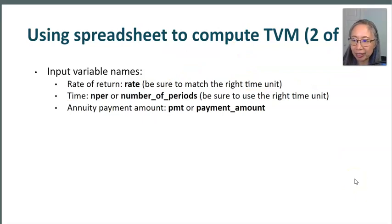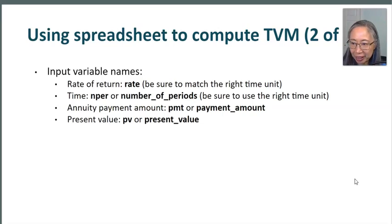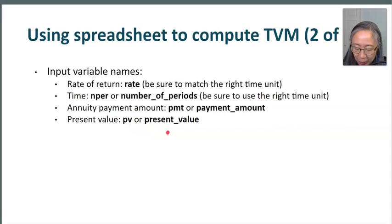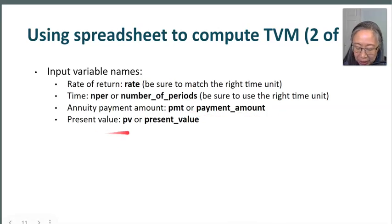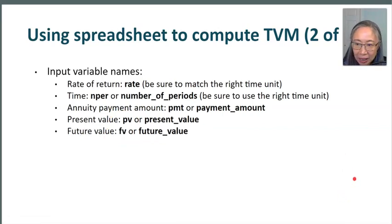The next variables are relatively straightforward. PMT (or 'payment amount' in Google) represents the periodic payment. PV (or 'present value' in Google) represents the present value. FV (or 'future value' in Google) represents the future value. Both Excel and Google Sheets use the same notation conventions — Excel uses abbreviated names while Google uses full descriptive names.